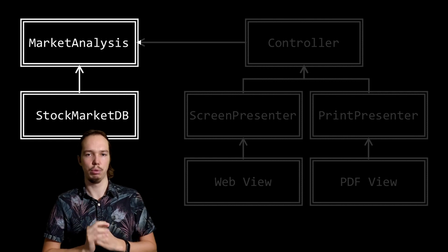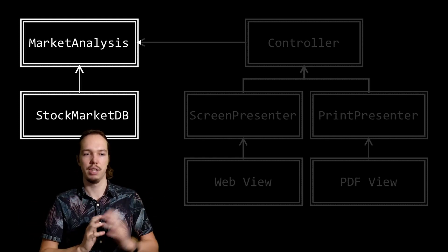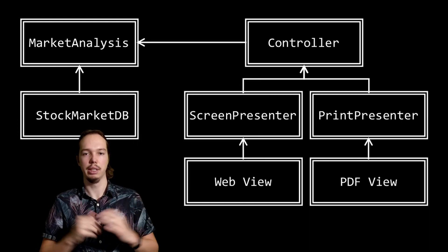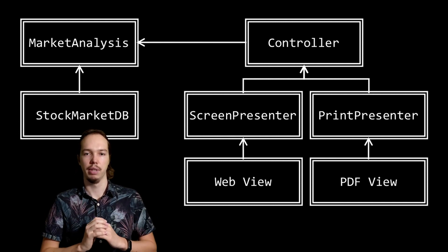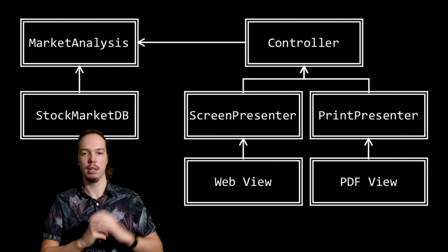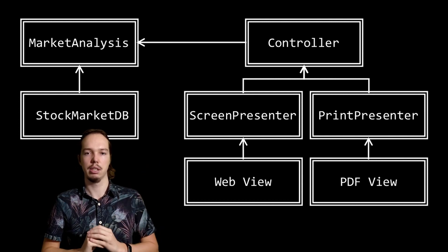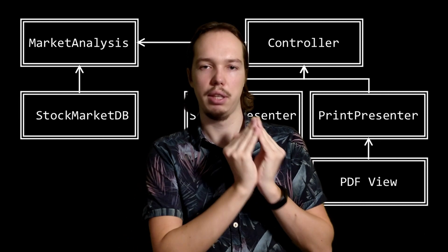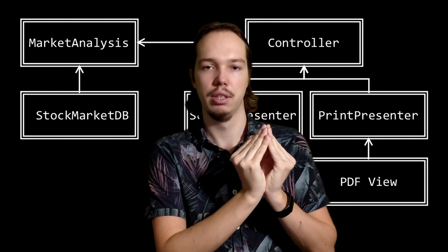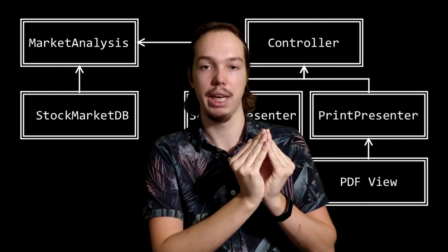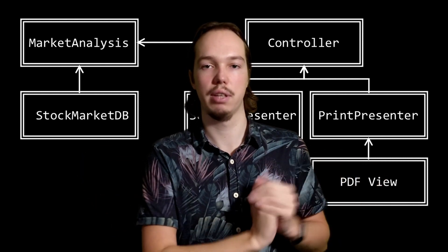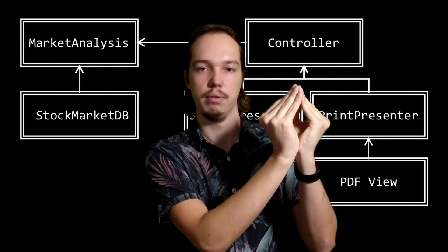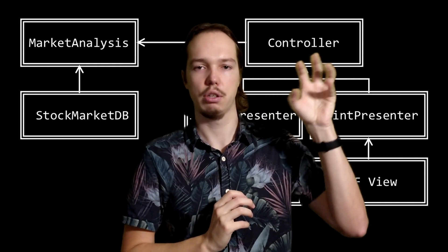We made sure the arrow points from the stock market database to the market analysis algorithms because we don't want changes in the stock market database to impact those algorithms. If we decide to gather data from different stock exchanges, this should not change any of the market analysis algorithms. Similarly, if we want to add a new way of presenting data — maybe a mobile-friendly view — this should not impact the market analysis algorithms. All dependencies point towards the market analysis component, meaning it is protected against change and closed for modification.